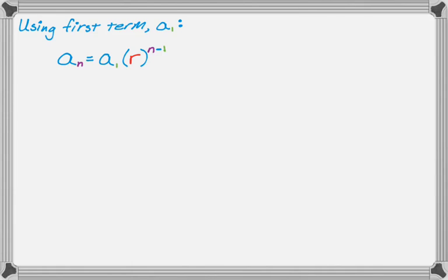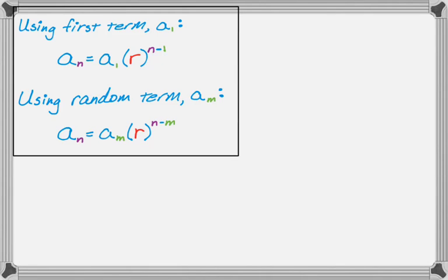But sometimes you don't know the first term, but you do know some random term. So if we know a random term, which is just a sub m, we could write our formula as a sub n equals a sub m times r to the n minus m. You'll notice the only real difference is in the first formula we use a sub 1 and it's n minus 1. Here we're using a sub m and it's n minus m. So as long as those are the same number, things are going well.